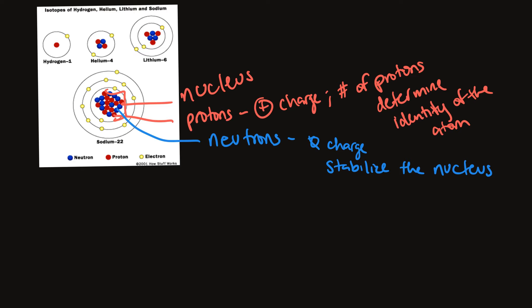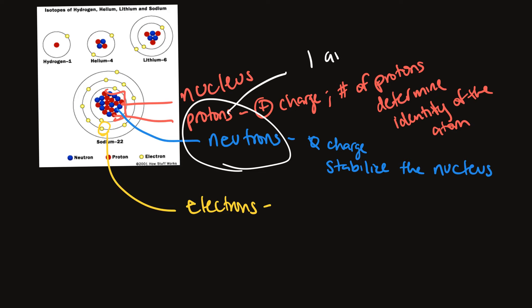In the electron cloud, which is outside of the nucleus, we have the electrons. Electrons are extremely small subatomic particles compared to protons and neutrons. Protons and neutrons are roughly the same size — we typically call it 1 AMU, which stands for atomic mass unit, similar to grams or pounds but for atoms. Electrons, by comparison, have a mass of about 0.0005 AMU, so they are extremely small compared to protons and neutrons.